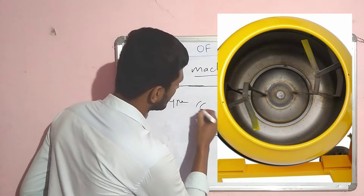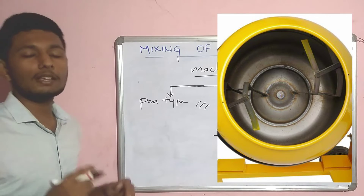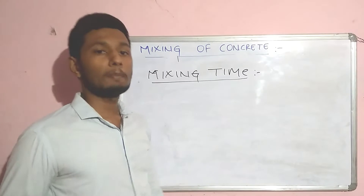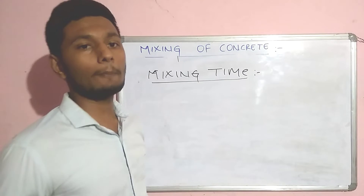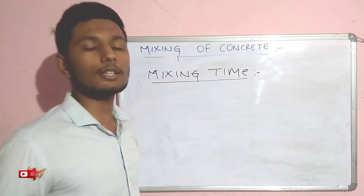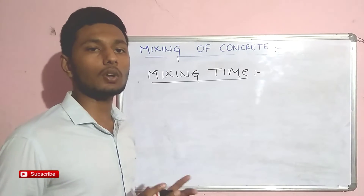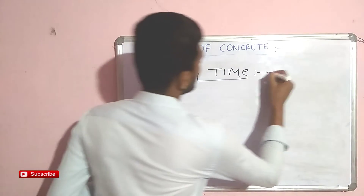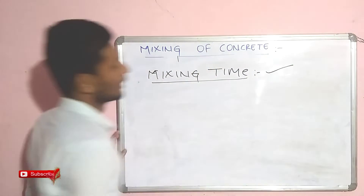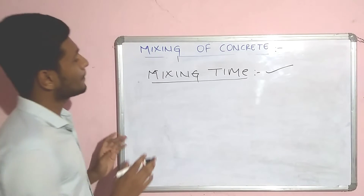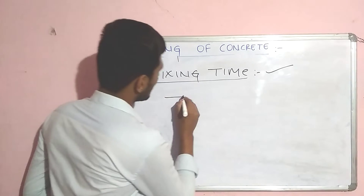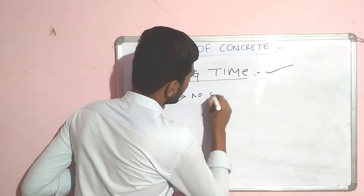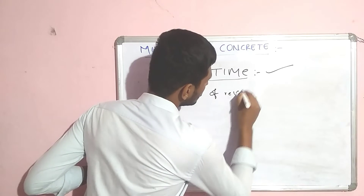The efficiency of the mixer depends upon the number of blades and the mixing time of the concrete. Mixing time is very important to achieve homogeneous properties of the concrete. Mixing time plays a crucial role.